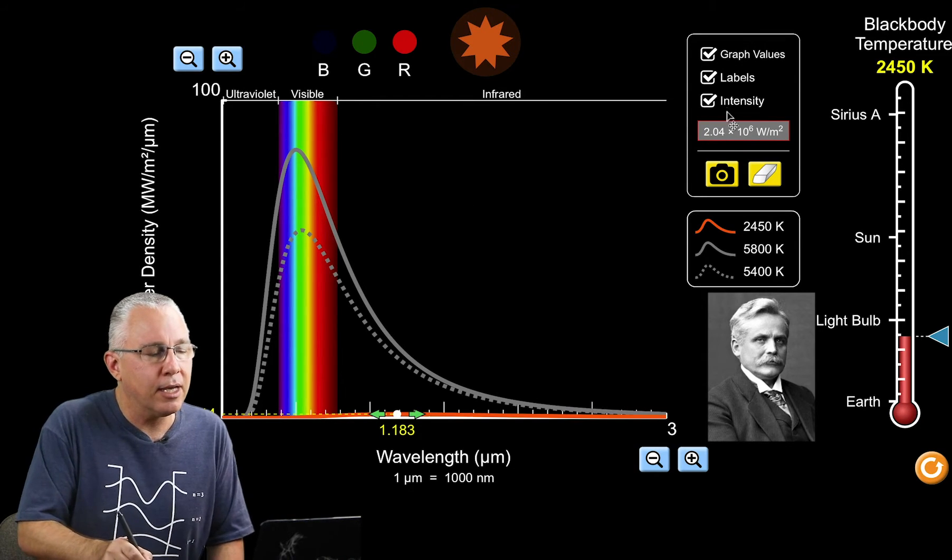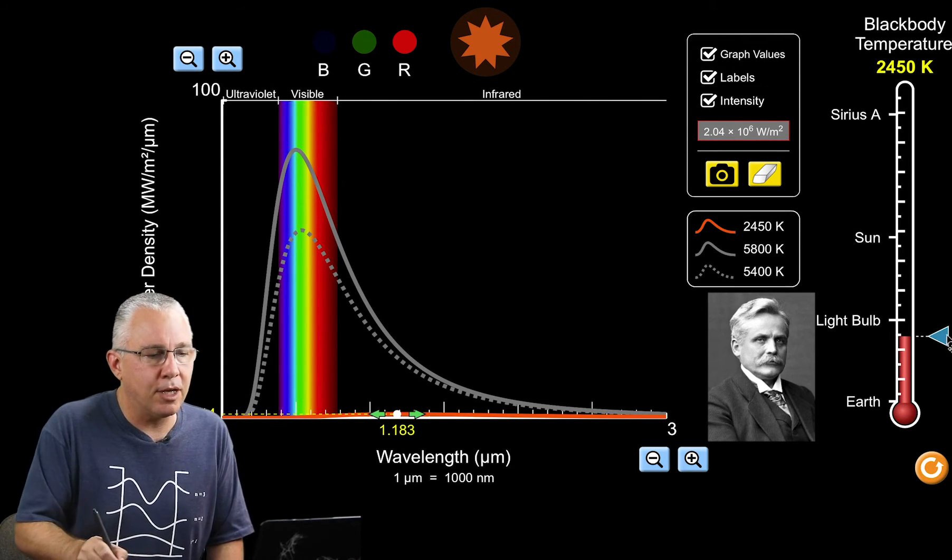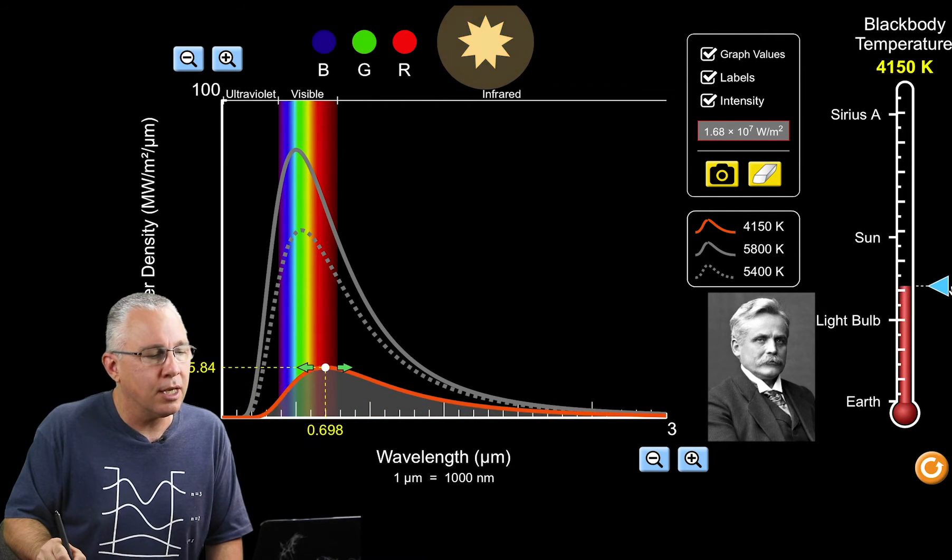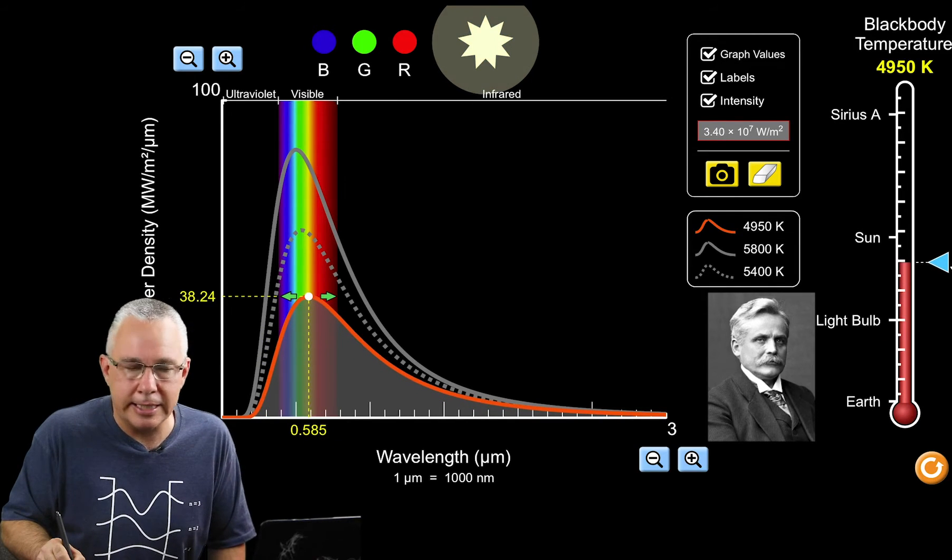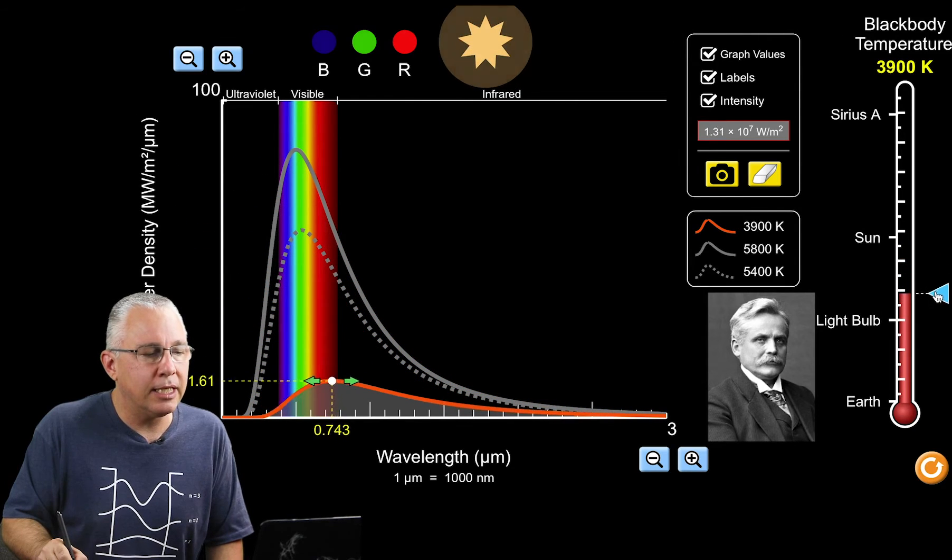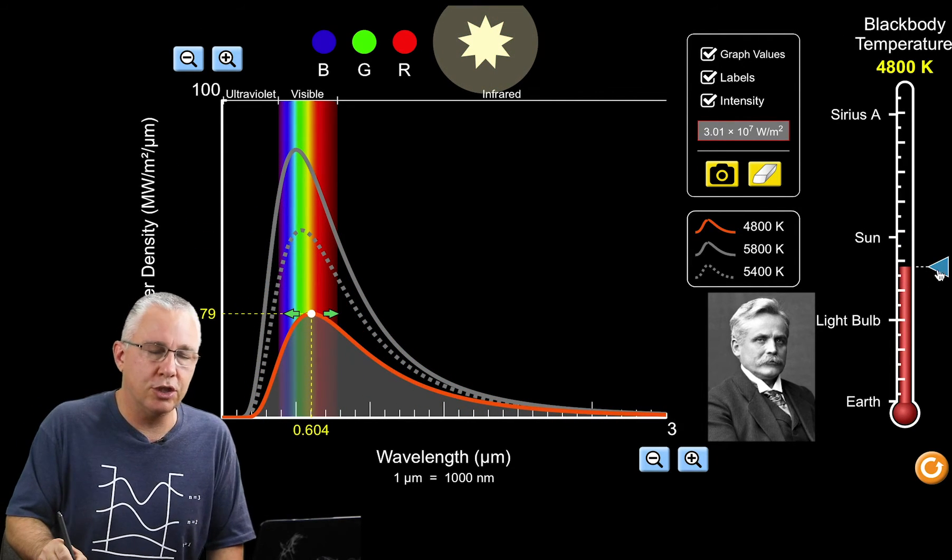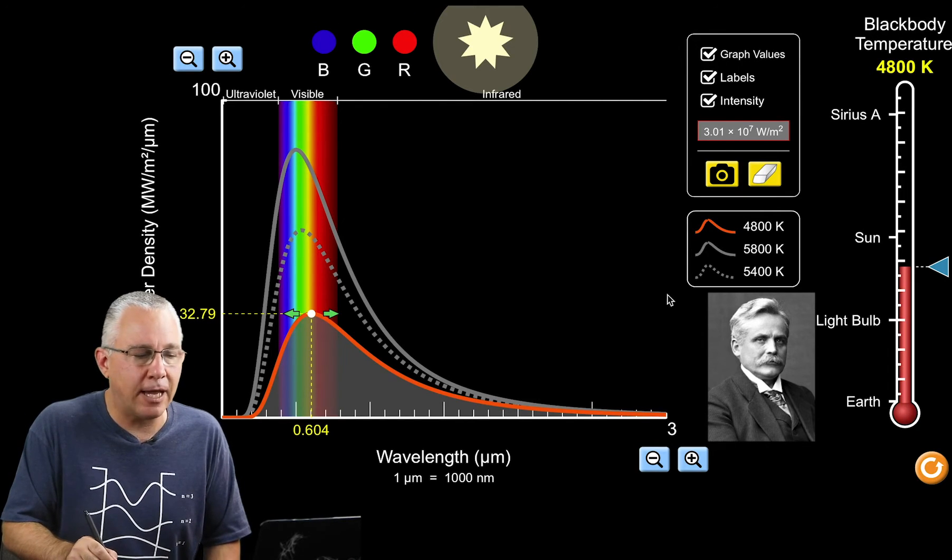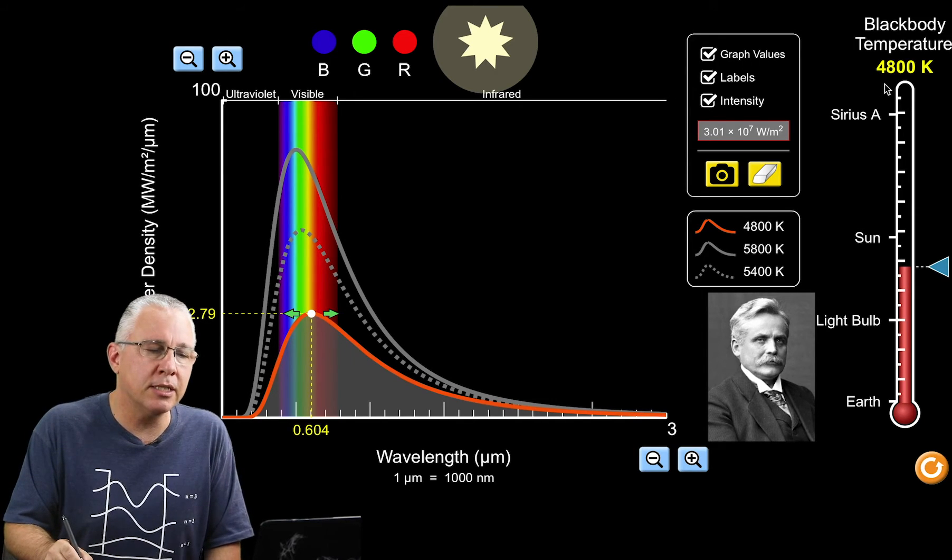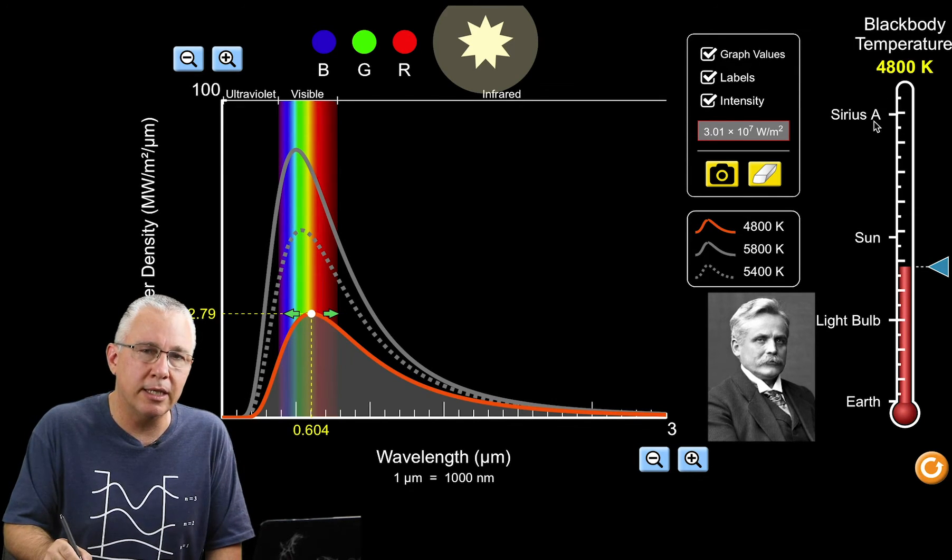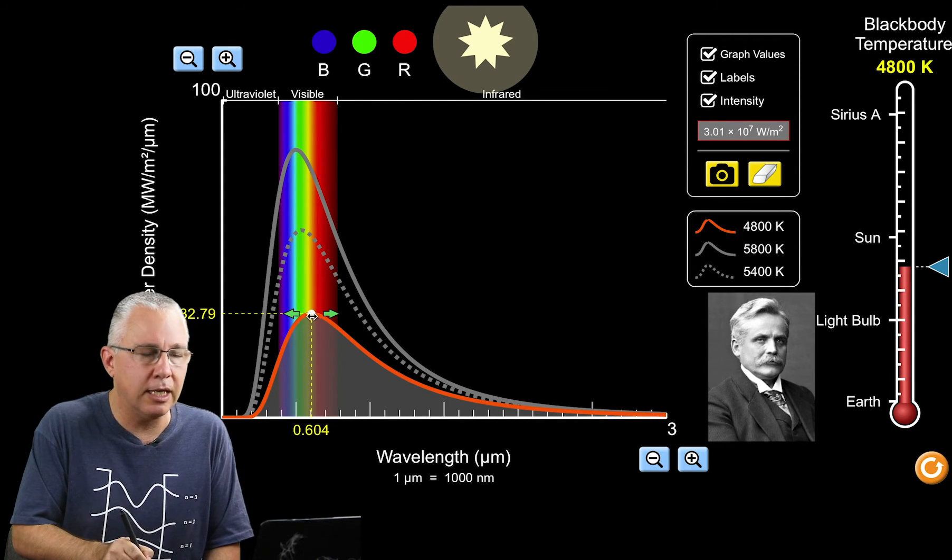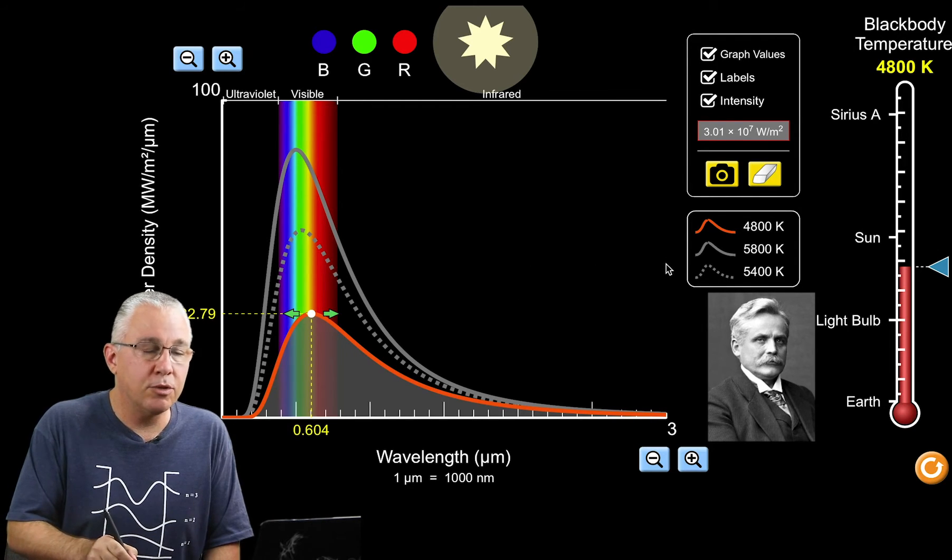As my temperatures increase, you'll notice the wavelengths are decreasing of that particular peak intensity. We have an inverse relationship between the wavelength at its peak value and the temperature. If you can work out the maximum wavelength intensity, this particular value, then you can use this relationship, Wien's Law, to determine the temperature of the star.